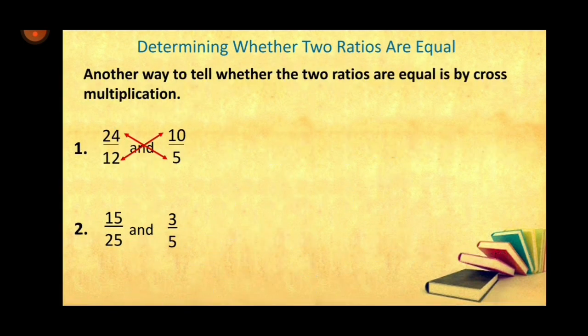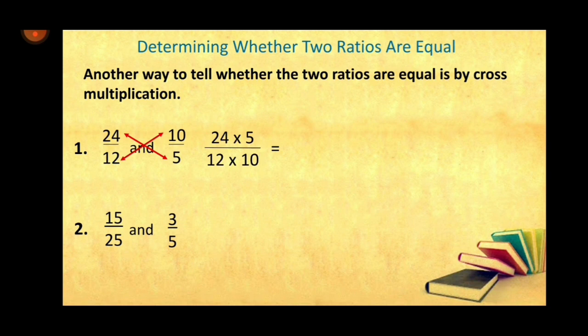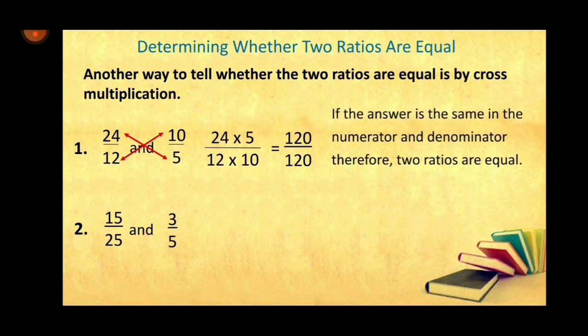The other way in determining whether two ratios are equal is the process of cross multiplication. Example: 24 over 12 and 10 over 5. Cross multiply: 24 times 5 and 12 times 10 — both equal 120. If the answer is the same in the numerator and the denominator, the two ratios are equal.